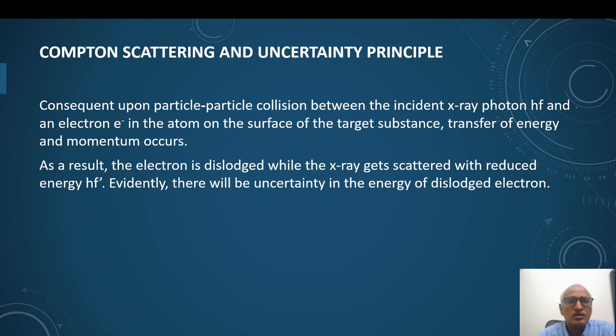Now we will discuss how Compton scattering has provided a proof of uncertainty principle. In Compton scattering, high frequency radiation like x-ray photon is incident on a target. This photon interacts with electron as a particle, transfers energy and momentum. Now the electron is ejected or emitted and moves with some velocity. The x-ray gets scattered with reduced energy. Evidently, there will be uncertainty in the energy of dislodged electrons. And this provides the proof that uncertainty does exist in case of tiny particles.